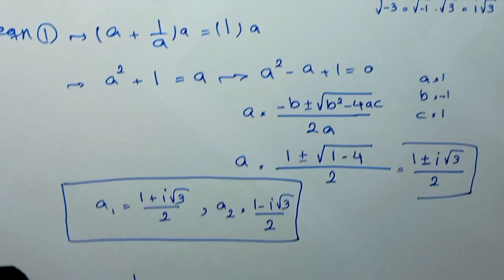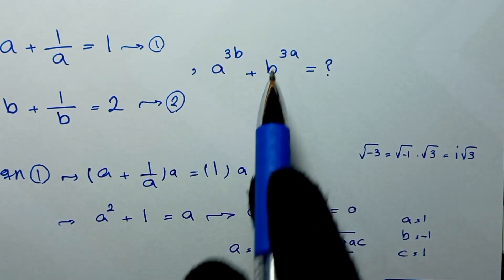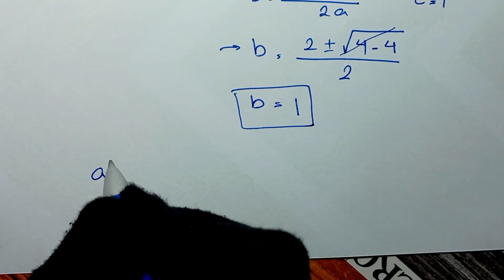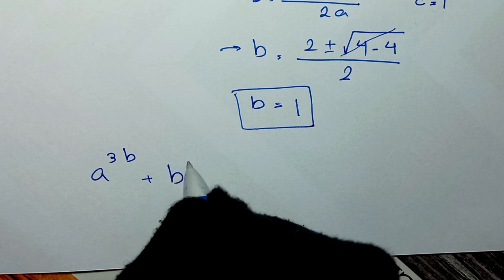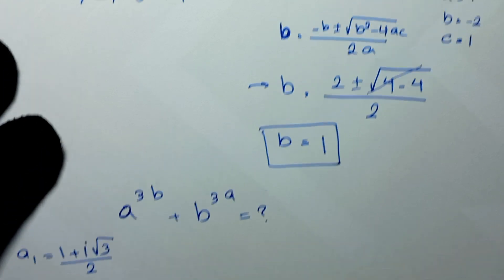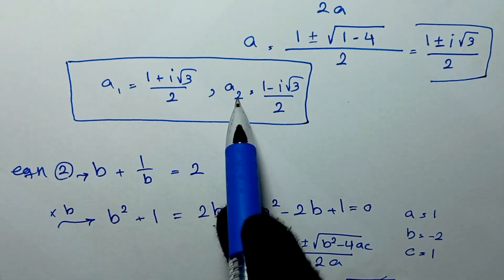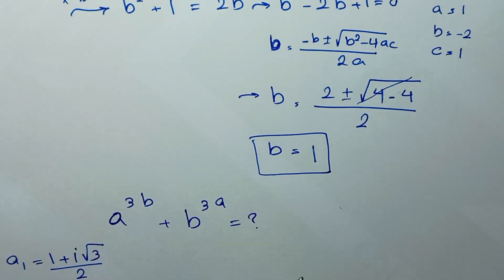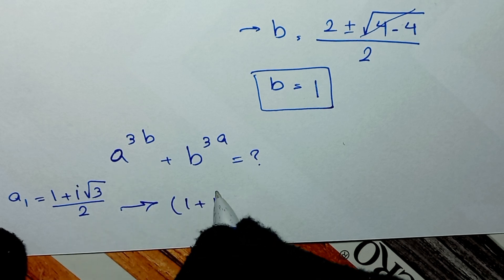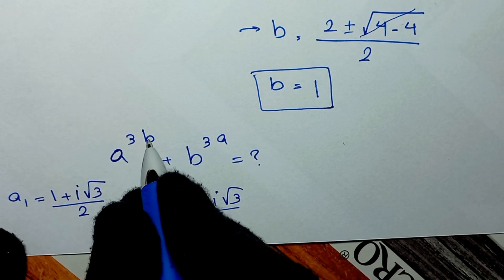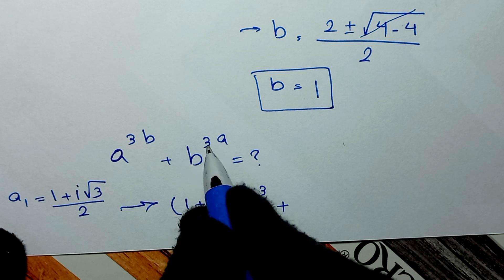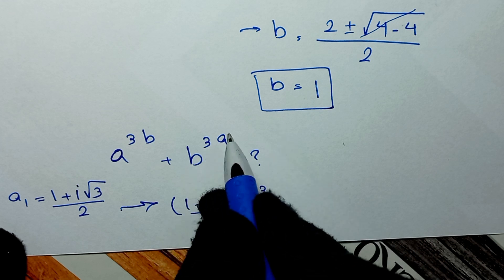Our original problem is a to the power of 3b plus b to the power of 3a. We have two values for a: a₁ and a₂. We first substitute a₁: one plus i square root of three over two, raised to the power of 3b. Since b equals one, 3b equals three. Plus one to the power of 3a, which equals one.